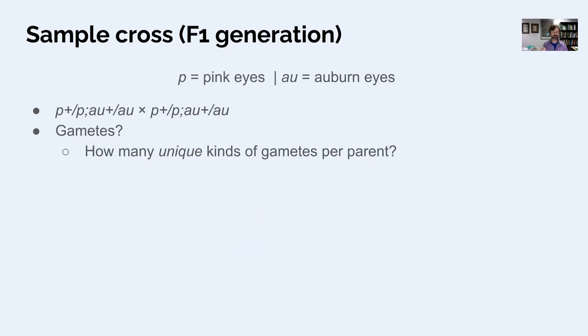All right. So these would be our f1 individuals, as I mentioned, now spelled out, p plus p, au plus au. F1 by F1 is crossing two of the same kind. And now we have a whole bunch of different kinds of gametes. If you want, you can pause the video and try to figure this out for yourself. How many kinds of gametes can each of these parents make?